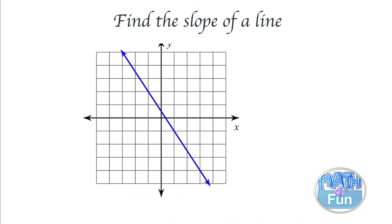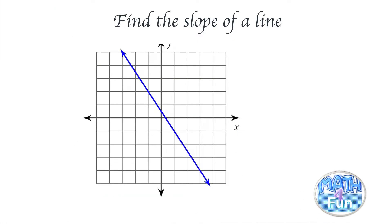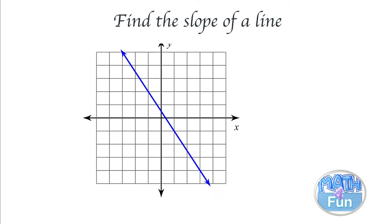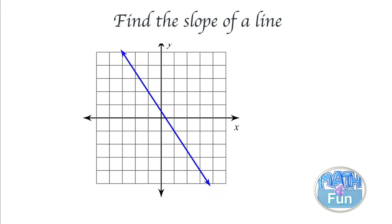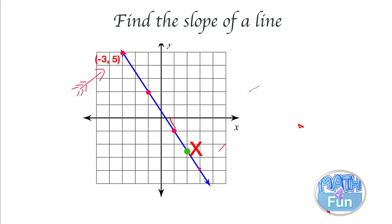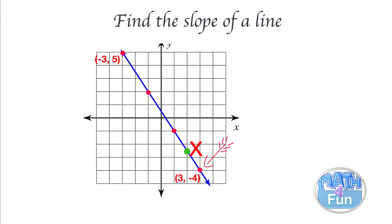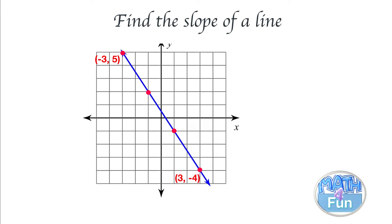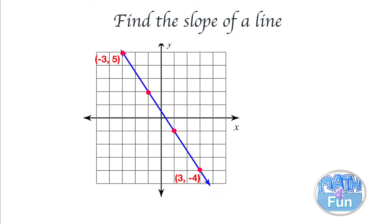Hello and welcome to Math for Fun. Let me show you how to find the slope of a line from the graph. The most important thing here is to pick two points that are lying on corners, like the point negative three, five and three, negative four. You can either go from the lower point to the upper point or from the upper point to the lower point, but in this order.